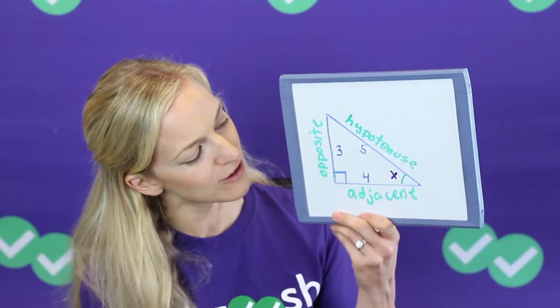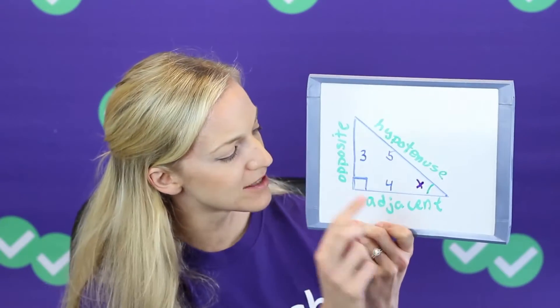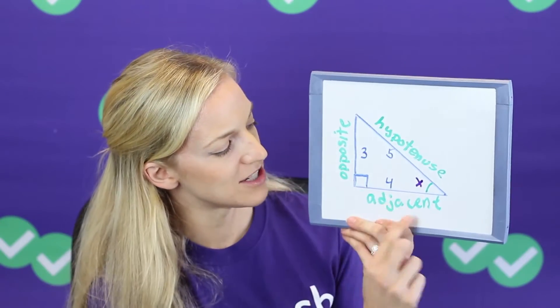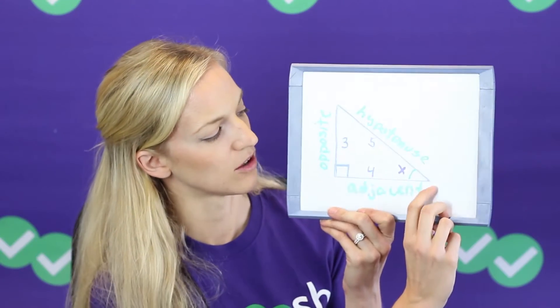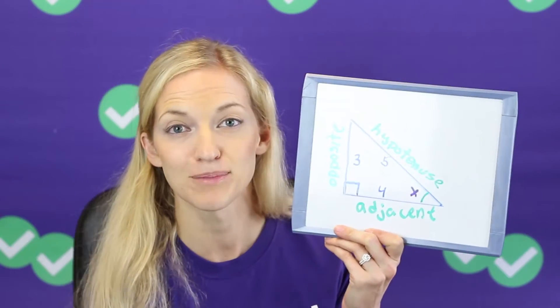First of all, what is trigonometry? Trigonometry is the field of math that deals with triangles — particularly the relationship between the sides and the angles of triangles. In a trig class, the first thing you typically learn about is right triangles. Here is a 3-4-5 right triangle with the sides labeled: hypotenuse, adjacent, and opposite. Adjacent and opposite refer to a specific angle — the side next to the angle is adjacent, and the side across from it is opposite.